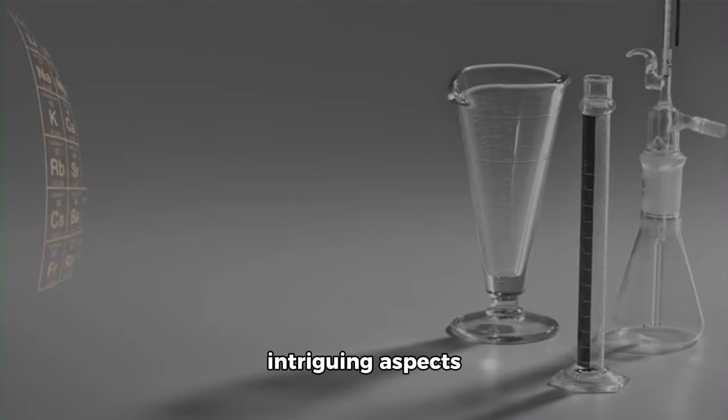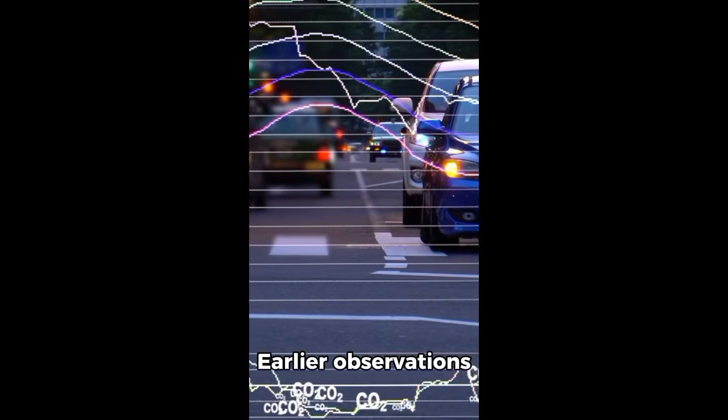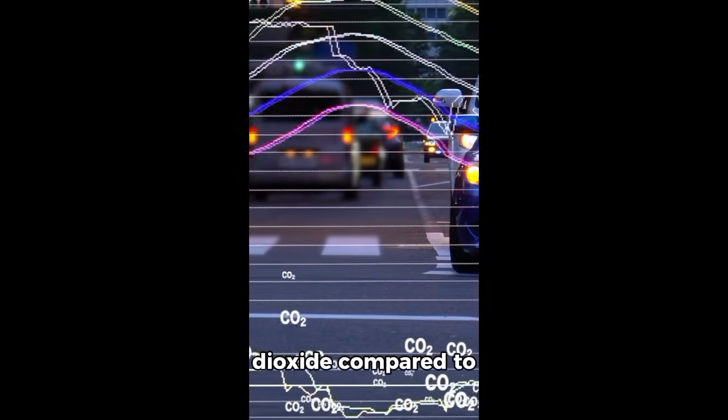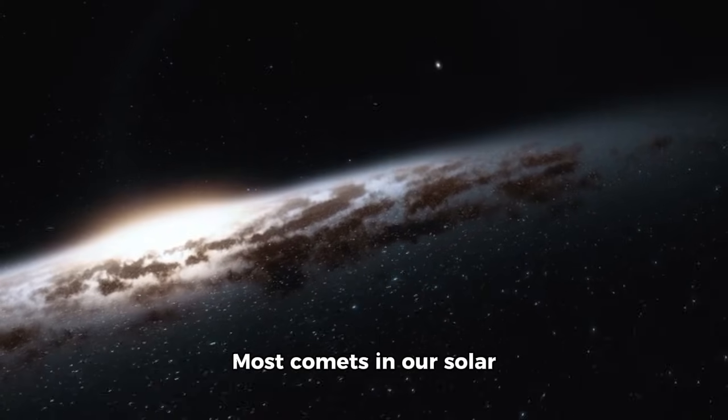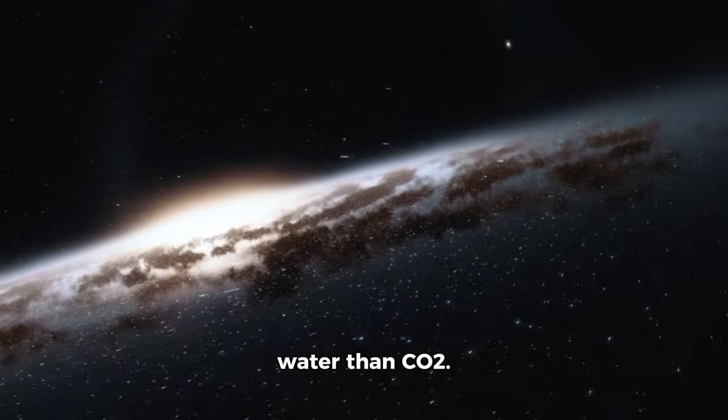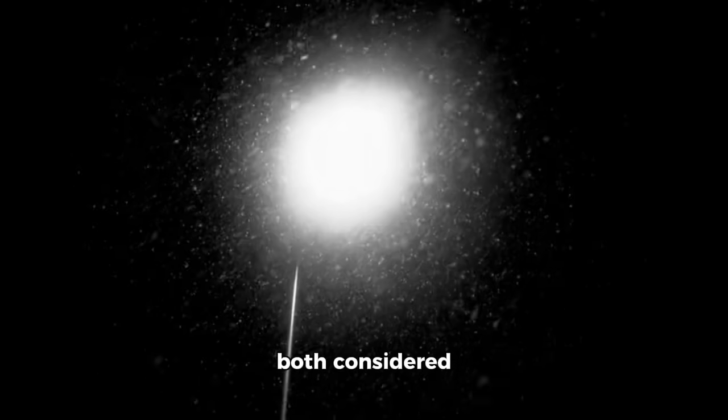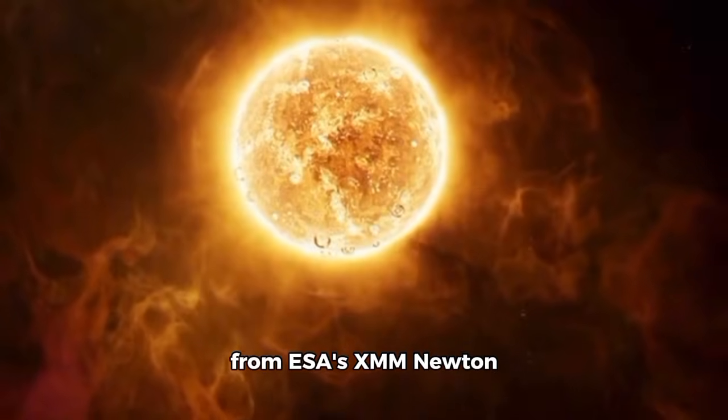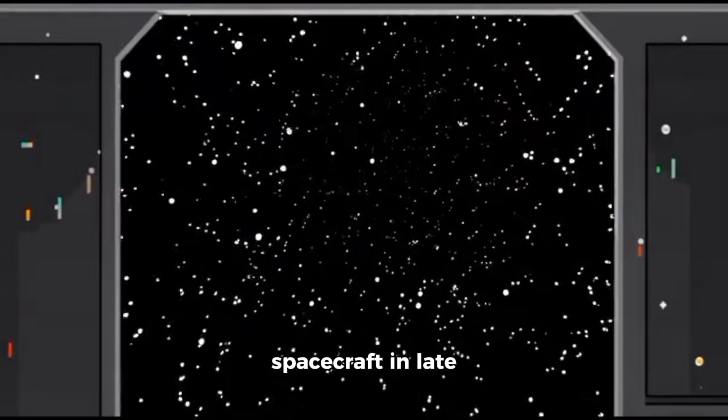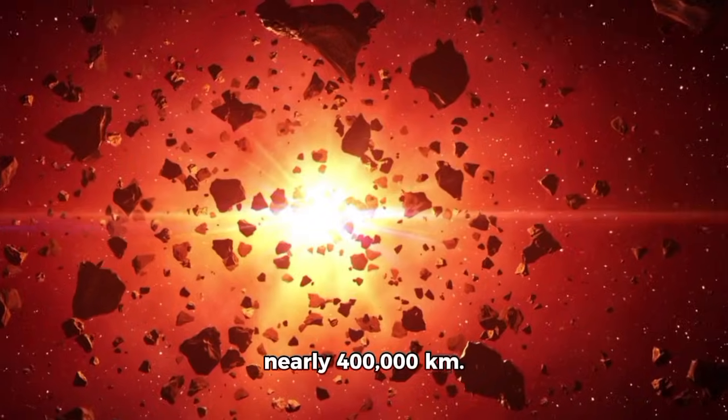One of the most intriguing aspects scientists are studying is 3I Atlas's unusual chemical composition. Earlier observations revealed extremely high levels of carbon dioxide compared to water, with a ratio of roughly 8 to 1. That's rare. Most comets in our solar system contain far more water than CO2. The comet is also releasing significant amounts of hydrogen cyanide and methanol, both considered prebiotic molecules or building blocks that could contribute to the chemistry needed for life. X-ray observations from ESA's XMM-Newton and Japan's XRISM spacecraft in late November and early December detected an extended halo around the comet stretching nearly 400,000 kilometers.